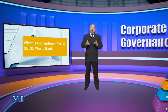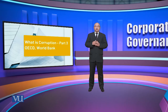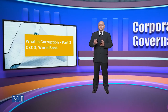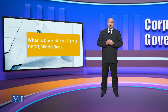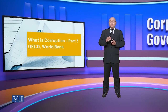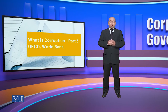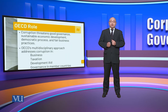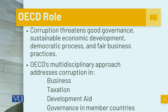OECD stands for the Organization for Economic Cooperation and Development — basically a committee of about 30 developed countries which are striving for a better world. Corruption tends to threaten good governance, sustainable economic development, democratic process, and fair business practices.